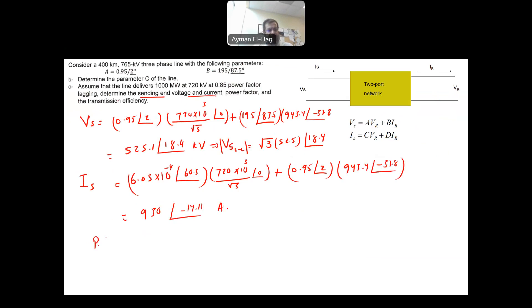Then we want to find the power factor at the source or the sending end is equal to cosine theta VS minus theta IS, which is equal to cosine of the VS is equal to 18.4 minus the angle, which is minus 14.11. And this will give me 0.84 lagging. You have to add the lagging because the current actually lags the voltage. And this is the nature of lagging power factor and the nature of the transmission lines. Although the transmission line has a capacitive part, but overall, usually it is inductive, except if the transmission line is lightly loaded.